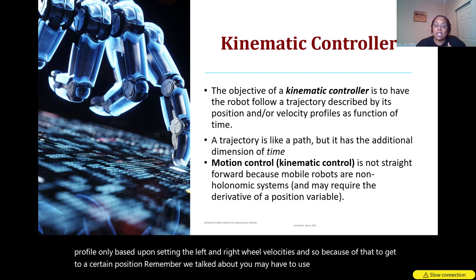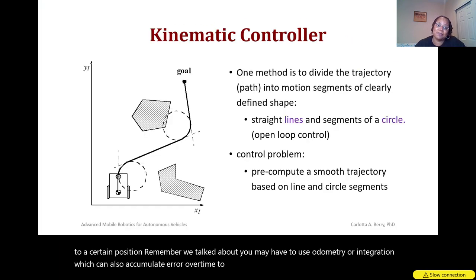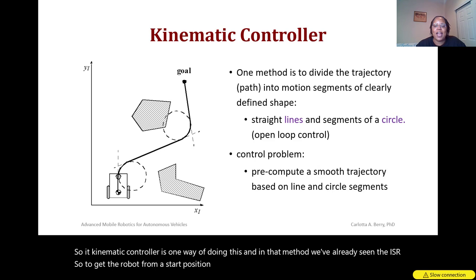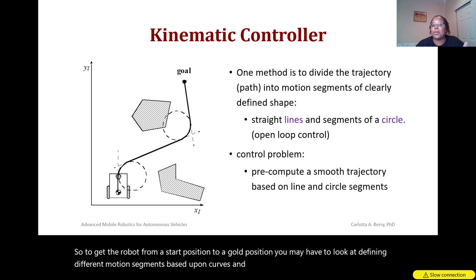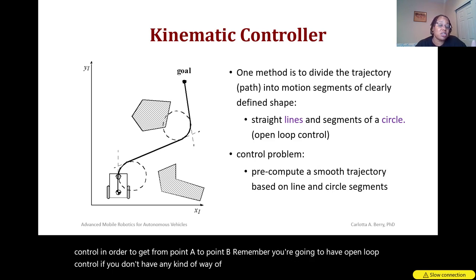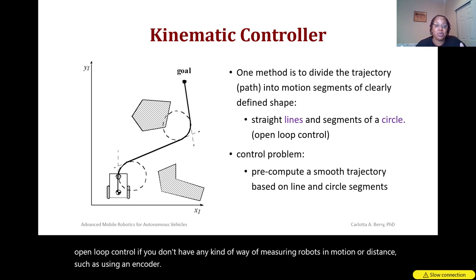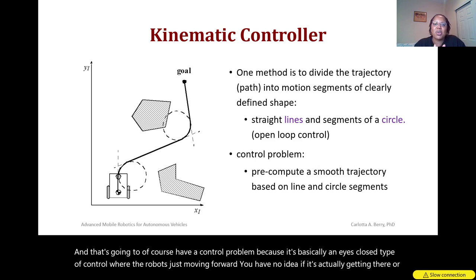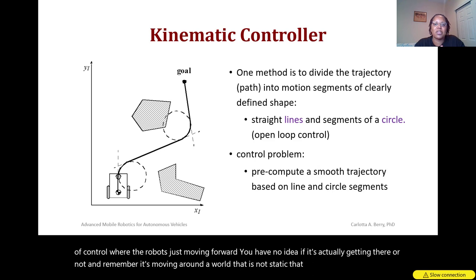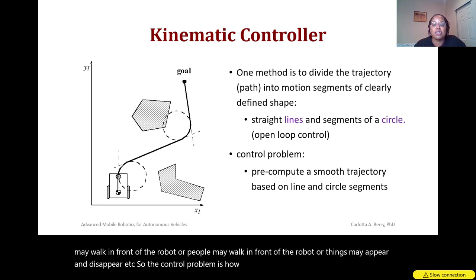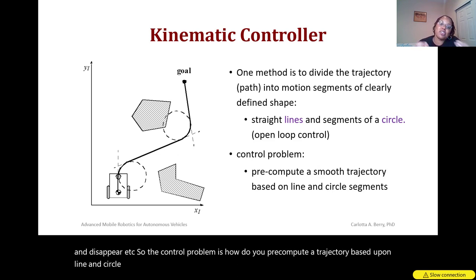To estimate the robot's position you may have to use odometry or integration, which can accumulate error over time. A kinematic controller uses the ICR, and to get the robot from a start position to a goal position you may have to define different motion segments based upon curves and straight lines with open loop control. Open loop control — without any way of measuring motion such as an encoder — is basically an eyes-closed approach where you have no idea if the robot is actually getting there, especially in a dynamic world where things may appear or disappear.